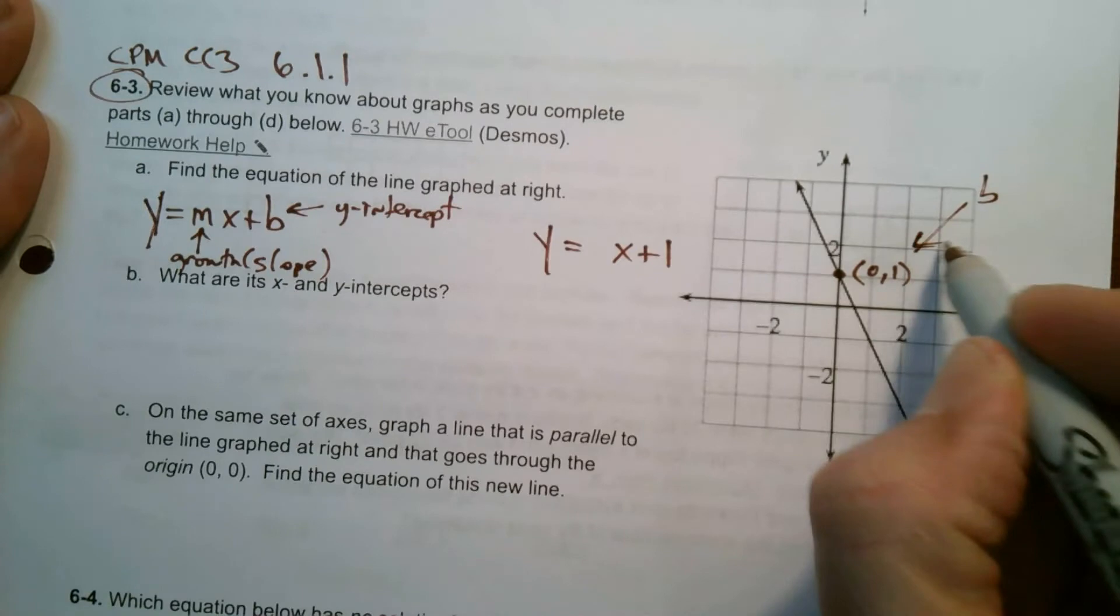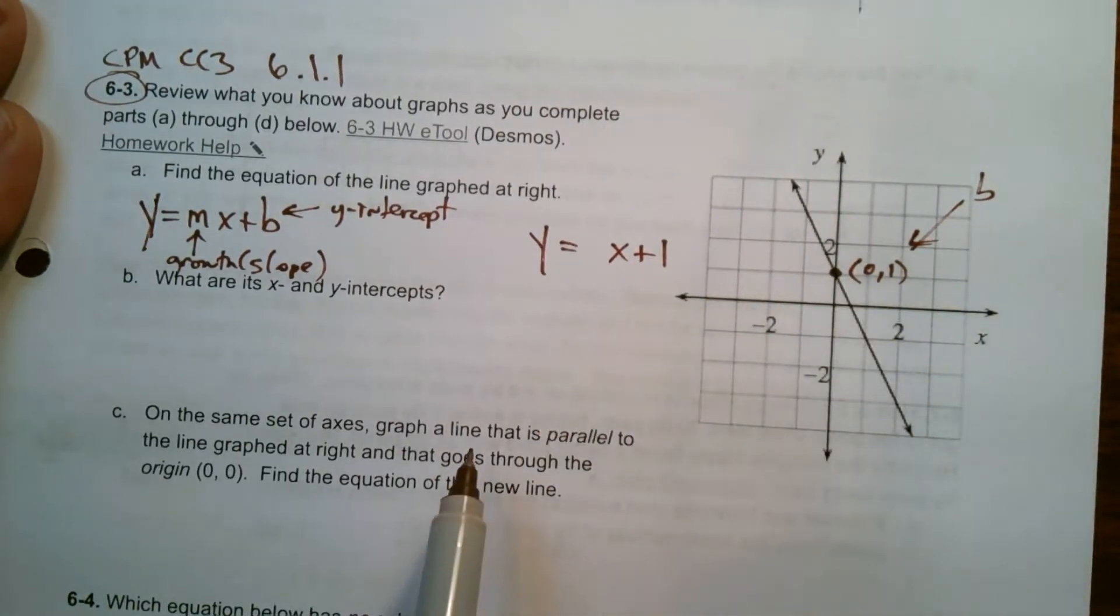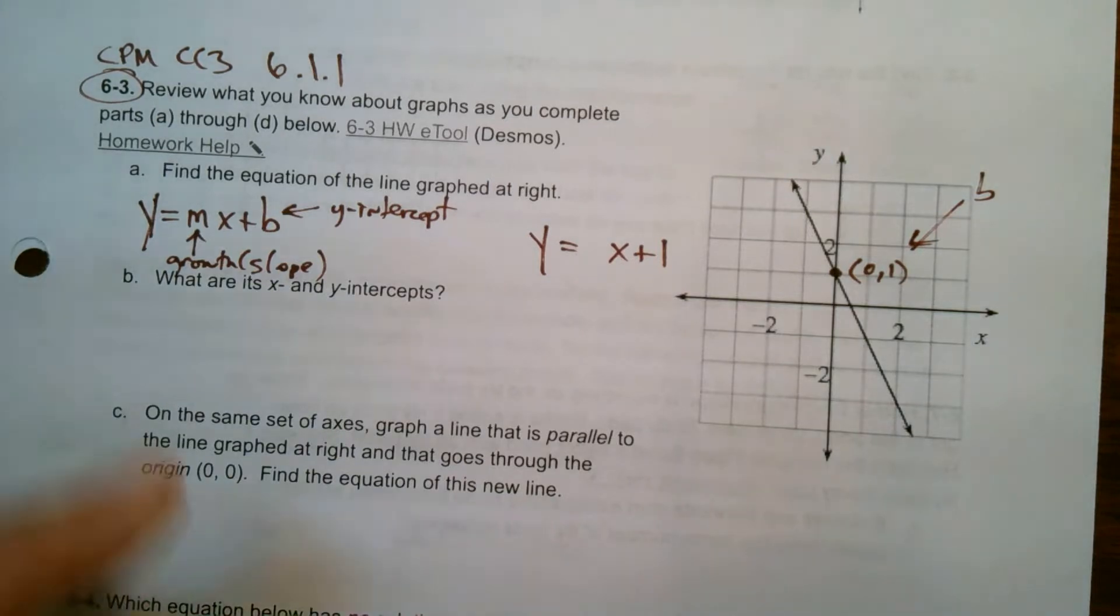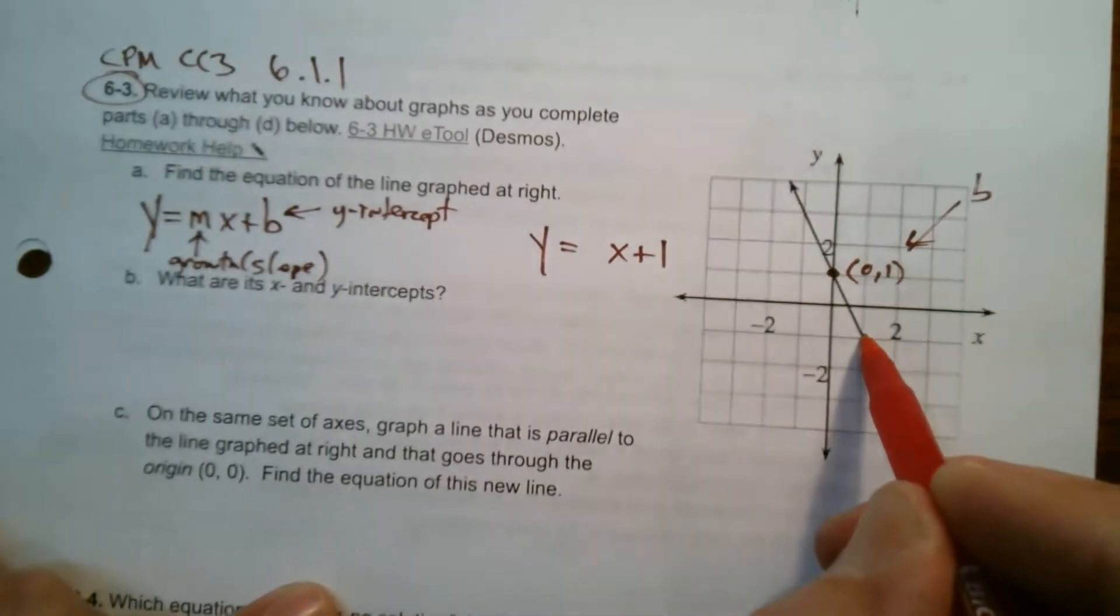That also represents the b, the y-intercept. So that's my plus 1. So now I've got to figure out what my growth is. Well, I'm going down, right?